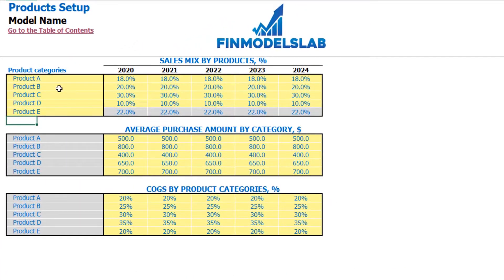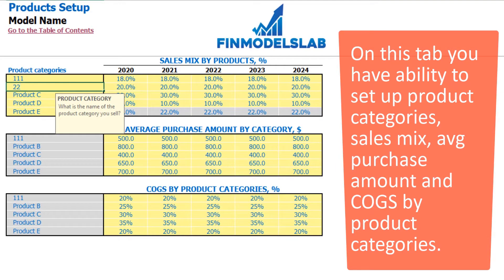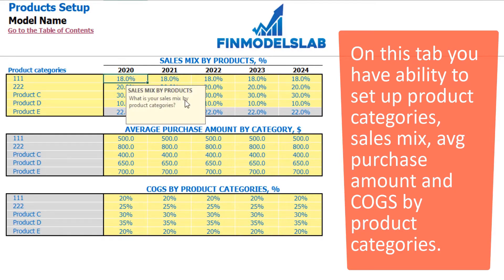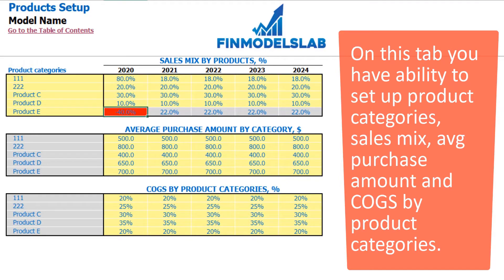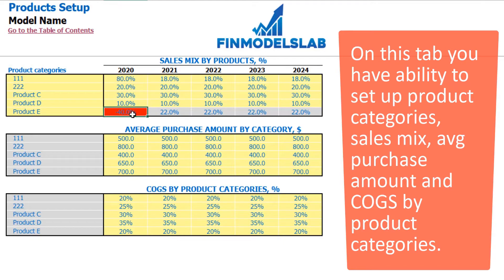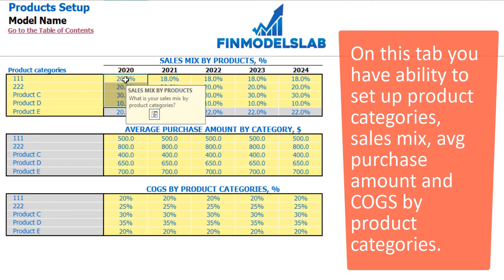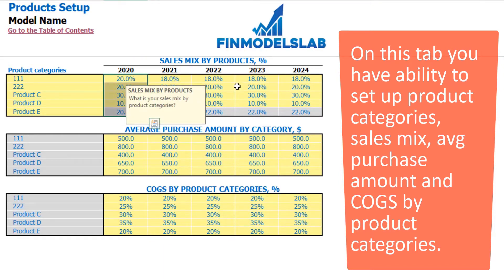On the products tab, you can input product category names like 111, 222, etc. — any name you need. You can set up the sales mix by products. For example, if you input something wrong like 80% for product number 5, which is 100% minus the sum of the previous 4 products — it will show minus 40% in red, meaning you input something wrong. If you set the breakdown correctly and the sum of your first 4 categories is less than 100%, product E will be everything else up to 100%. The total should always be 100%, and if correct, it will show in grey.